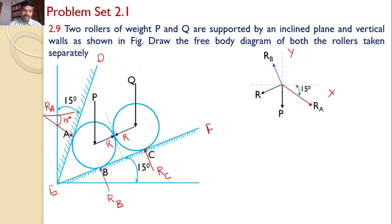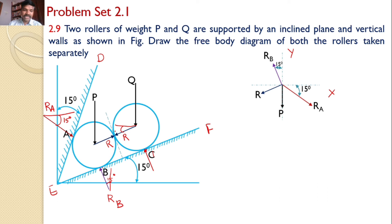Extending the same concept for Rb and Rc: Rb is perpendicular to EF, and EF makes an angle of 15 degrees with the horizontal. Hence Rb makes 15 degrees with the vertical. This is the complete free body diagram of roller P.